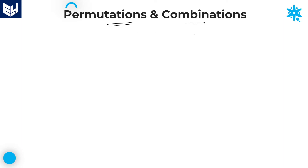Why? Because based on this topic, if you know this topic, then only it is possible to solve the problems related to probability. So probability and permutations and combinations are two interlinked chapters. Without knowing this particular topic, it is not possible to solve the problems related to probability.